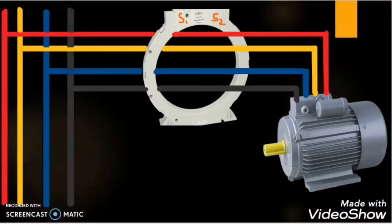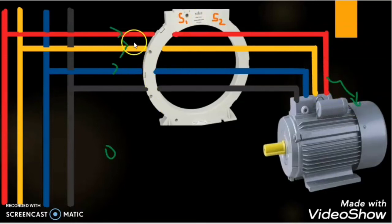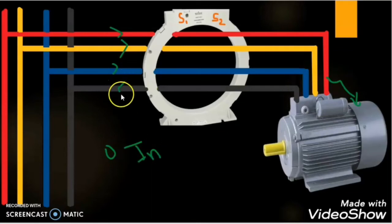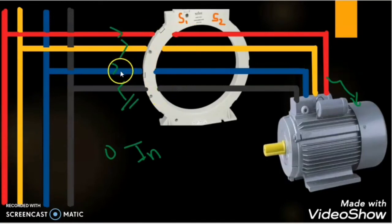The concept explained through the single phase system is the same for the three phase system. If the current IR plus IY plus IB is 0, the CBCT will not activate itself. But whenever there is an earth leakage fault in any phase, the resultant current between IR, IY, and IB will be some current, which we call neutral current. When the CBCT finds this current, it gives a signal to the relay and the relay operates accordingly. Now let us understand how to do the electrical wiring for ELR and CBCT in order to protect any load from earth fault current.